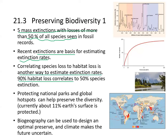Protecting national parks and global hotspots can help preserve diversity. Currently only about 11% of Earth's surface is protected, and those protected regions are shown here in red.